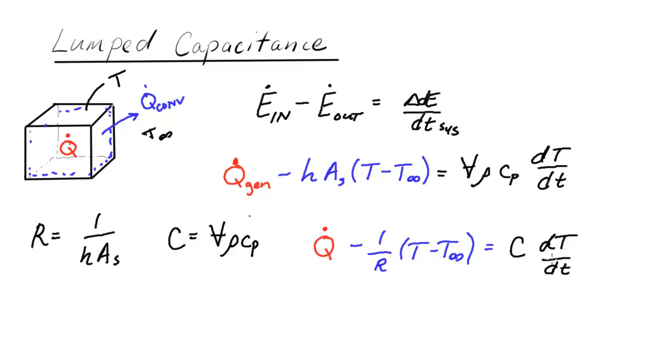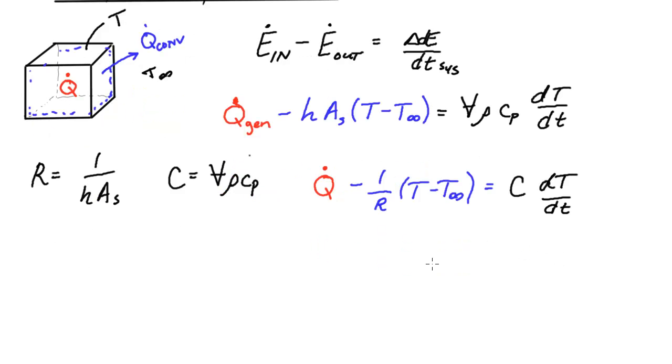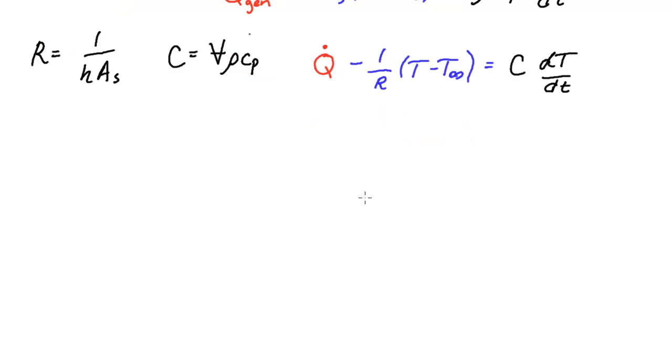Now at this point we could go ahead and start trying to solve this differential equation using the tools at our disposal. But we actually have one more substitution that's useful to make our problem easier. And I'm going to just show you that and then tell you why it works or is useful in a second. So we're going to define a theta variable to be T minus T infinity. So that would be this term, this here would be a theta.